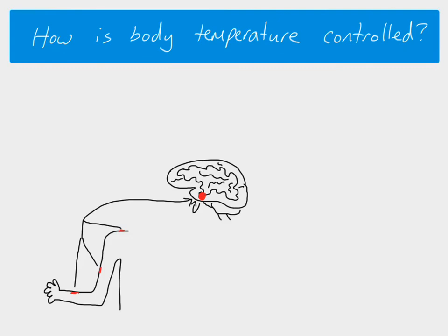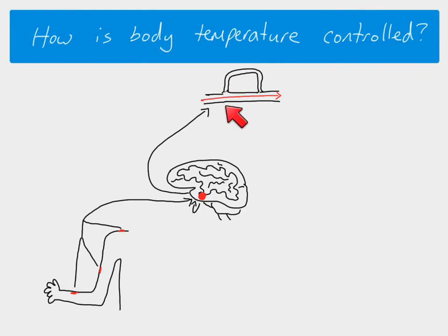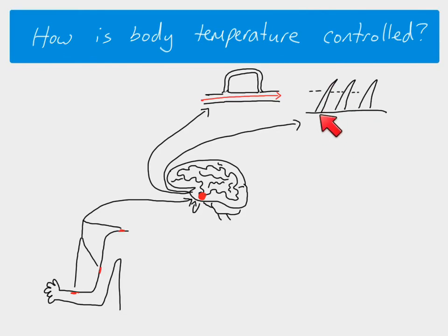As a result, the hypothalamus sends impulses to various effectors to bring about corrective actions. If the temperature has decreased, vasoconstriction occurs — the hypothalamus sends impulses to effectors in the blood vessels, causing vasoconstriction so blood does not flow through the surface capillaries. Impulses are also sent to effectors in the muscles that control the hairs, causing the hairs to stand up, trapping a layer of air and reducing heat loss.